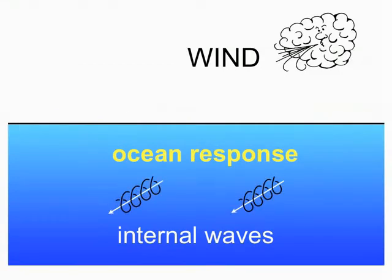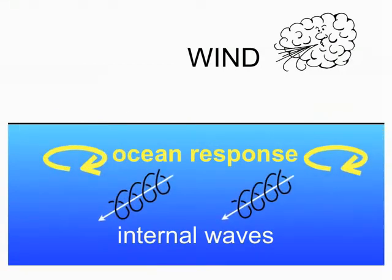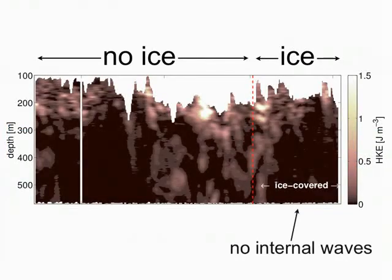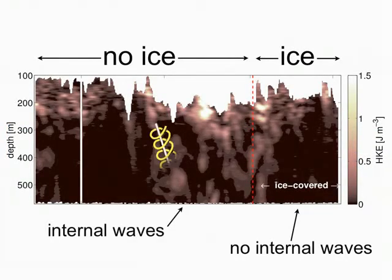But when there is no ice and the ocean is exposed to the atmosphere, internal waves are not damped. Then they can propagate into the deep Arctic, where just like surface waves, they break and mix the ocean.